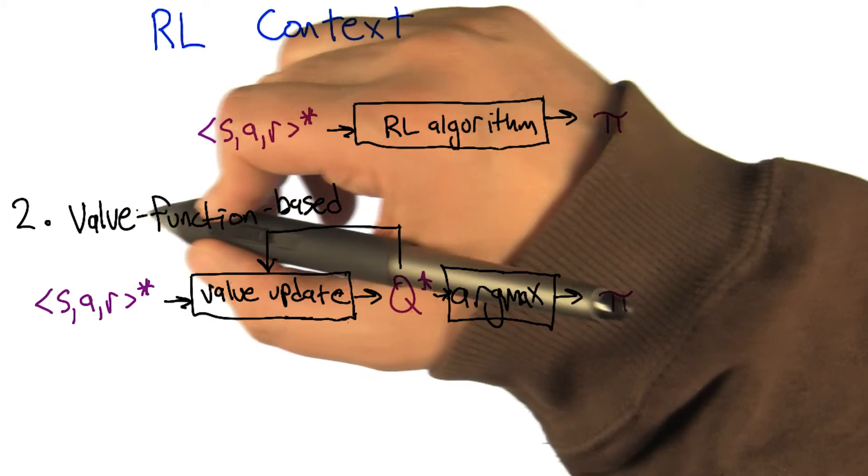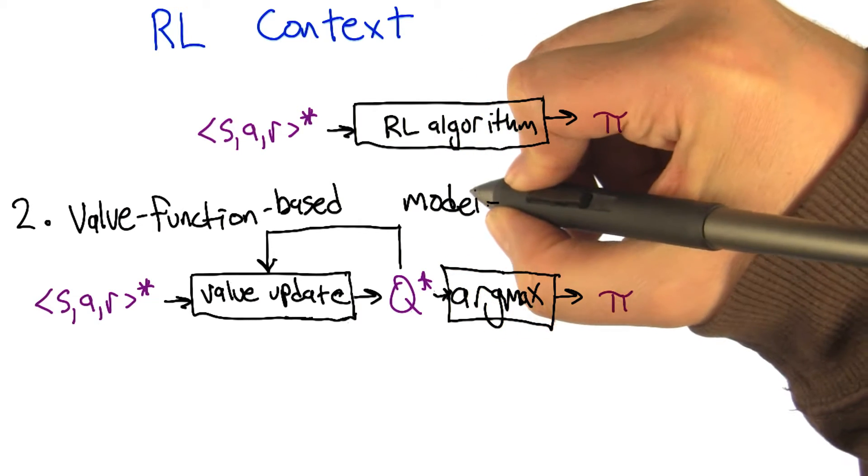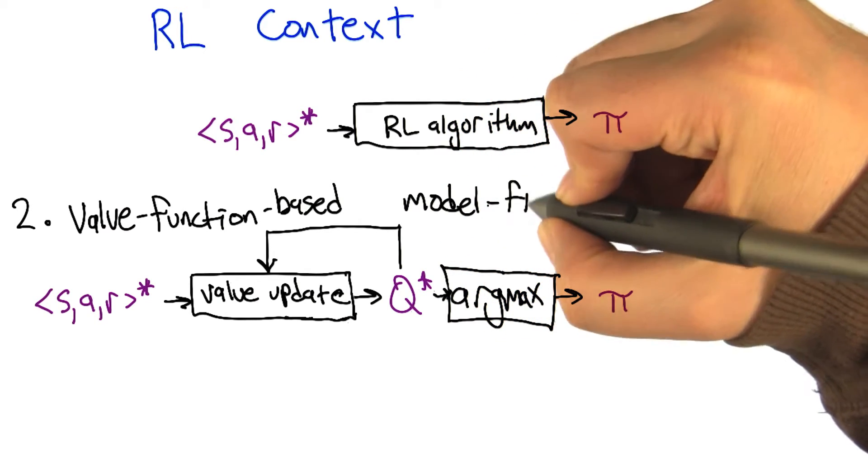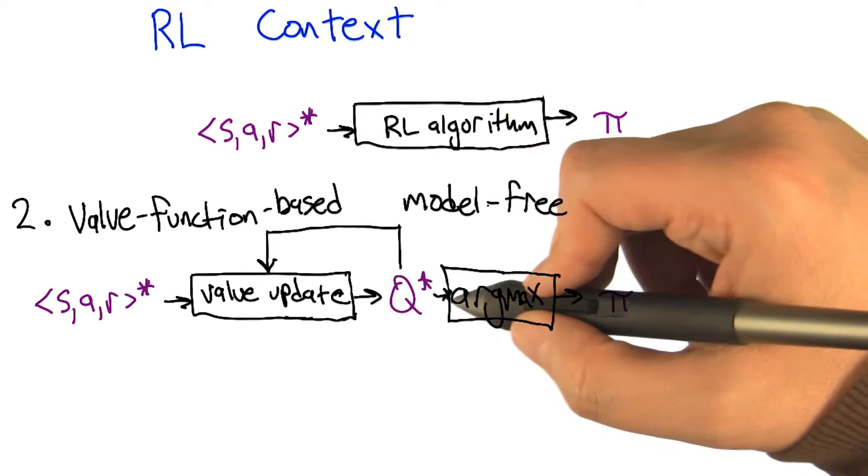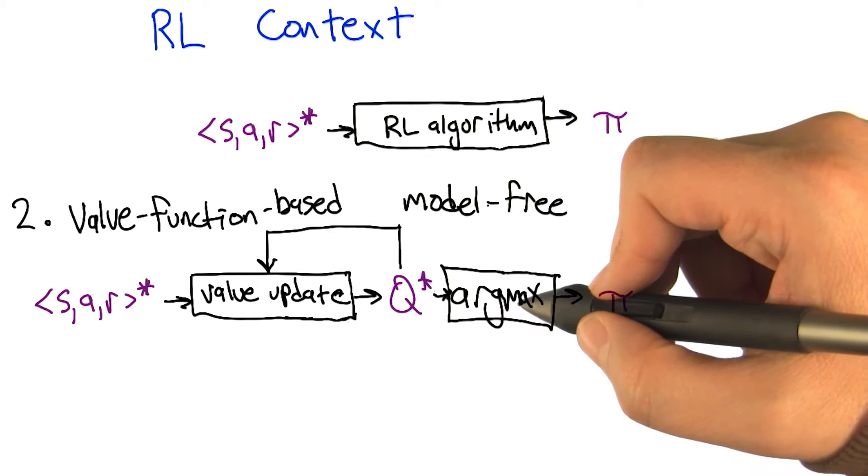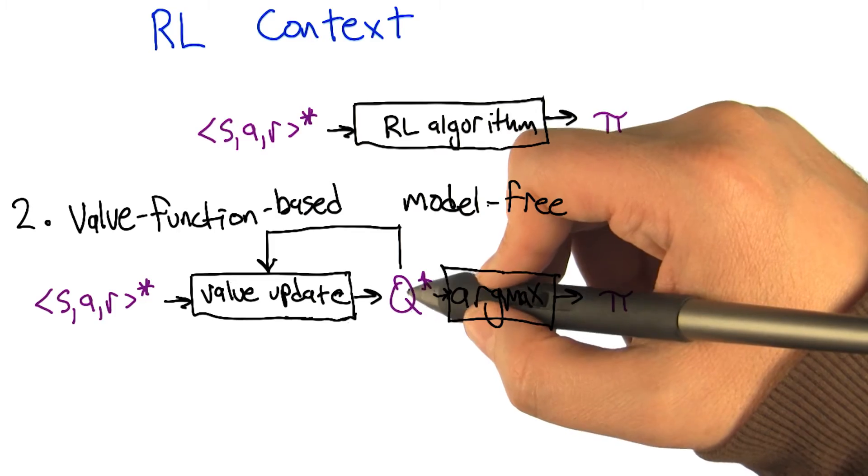So the second class of reinforcement learning algorithm that's important to think about, they're referred to as value function based, or sometimes model free. The beginning and the end of it are still the same. We're taking sequences of state action rewards and producing a policy, and we even have this Q star in between that we generate the policy from using the argmax.